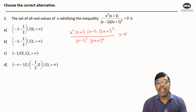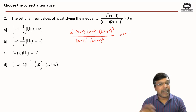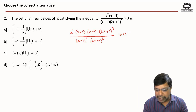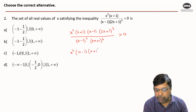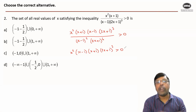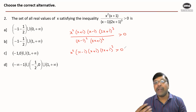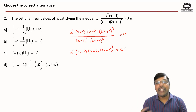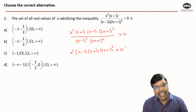Since the denominator is always positive, for the inequality to be positive the numerator must be positive. So x²(x - 1)(x + 1)(2x + 1)³ > 0. The critical points are the roots of this expression — the values of x for which the expression becomes 0, because that is where the graph intersects the x-axis.